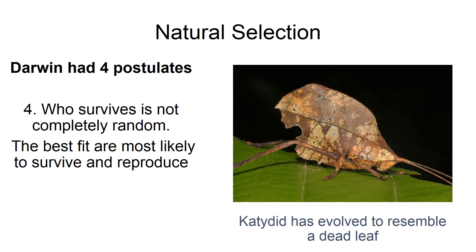Who survives and reproduces is not completely random over time. The best fit are most likely to survive and reproduce — and I want to get this 'survival of the strongest' out of your brain. It's the best fit. You don't have to be strong to survive and pass on your genes. Look at this katydid — it looks so similar to a decayed leaf, even the rear end looks like it's been chewed up. The more closely this katydid resembles a leaf, the less likely it is to get eaten by a predator like a bird, and the more likely it is to pass on those genes.